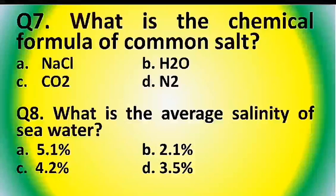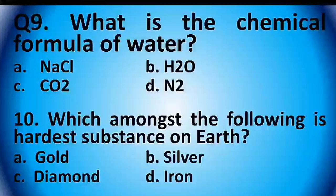Question 8: What is the average salinity of sea water? Options are: 5.1%, 2.1%, 4.2%, or 3.5%. The answer is option D: 3.5%.